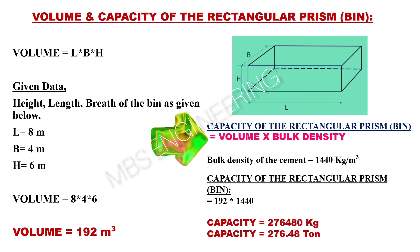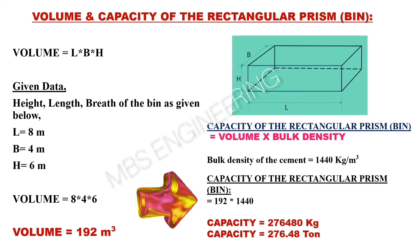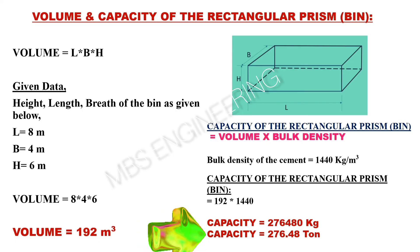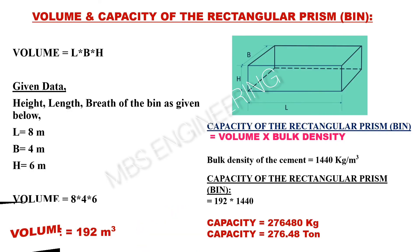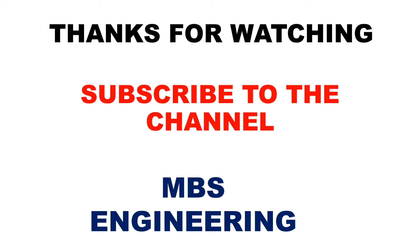Next, we learn about how to calculate the capacity of the rectangular prism or bin. Volume is multiplied by bulk density. Assuming the bulk density of cement is 1,440 kilograms per cubic meter, 192 multiplied by 1,440. The rectangular prism or bin has a capacity of 2,76,480 kilograms, or 276.48 tons. I hope everyone understands the standard equation for hopper, silo, and bin and how to calculate the volume and capacity. Thanks for watching. Subscribe to the channel for more videos.